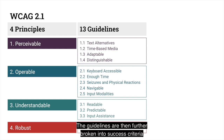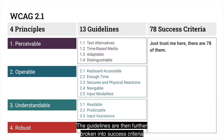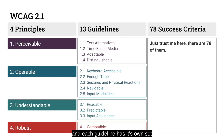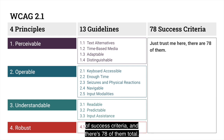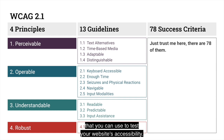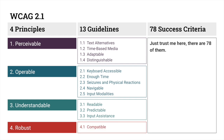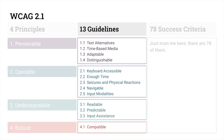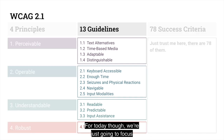The guidelines are then further broken into success criteria, and each guideline has its own set of success criteria — there are 78 of them total. The success criteria are really specific use cases that you can use to test your website's accessibility. For today, though, we're just going to focus on the 13 guidelines.